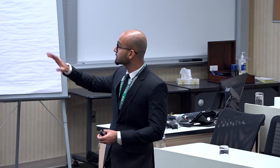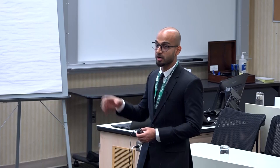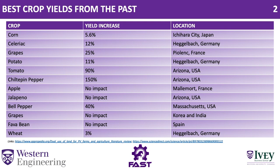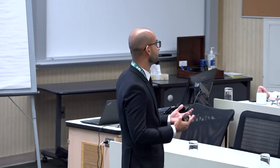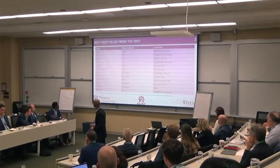I've recapped the research done all over the world and included the best crop yields. For corn, research done in Japan showed a 5.6% increase in corn yield just by incorporating Agrivoltaics. Similarly, research done in Germany on Celeriac showed a 12% increase in crop yield. In the USA, tomato and pepper showed an increased crop yield of almost 90% and 150%, with research done in Arizona. Bell peppers in another US study showed a 40% increase in crop yield. This slide summarizes that Agrivoltaics doesn't impact farmland negatively; instead, there is a chance to increase crop yield by incorporating Agrivoltaics.